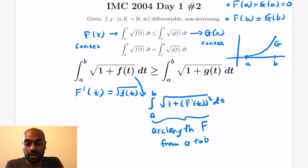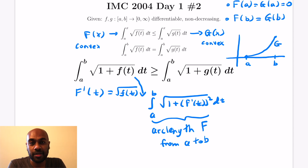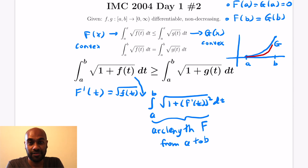This problem is another example of labeling things and then interpreting the actual information you're given in terms of the geometry of the functions.